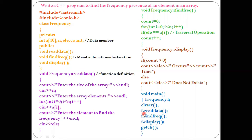f is the object name, dot is the member access operator, and readData is the member function — so we are accessing the readData member function. The keyword void means readData does not return any value. 'frequency' is the name of the class, and the two colons are called the scope resolution operator, which is used when member functions are defined outside the class. The next line uses cout to print 'enter the size of the array'.